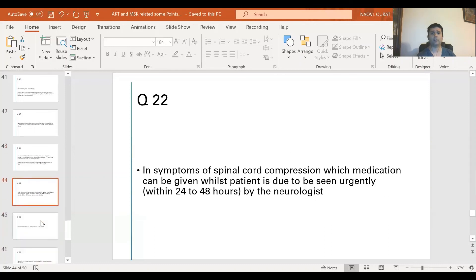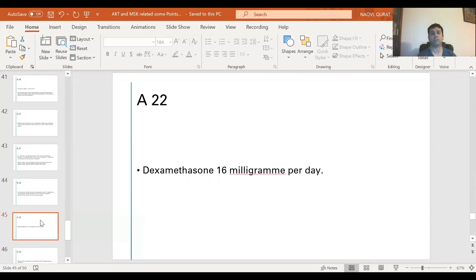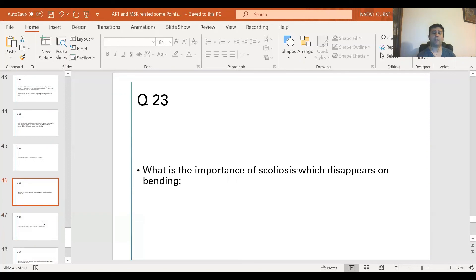Question 22: In symptoms of spinal cord compression, which medication can be given whilst patient is due to be seen urgently within 24 to 48 hours by the neurologist? Answer is dexamethasone 16 mg per day.